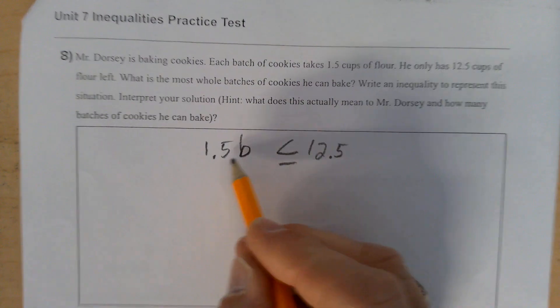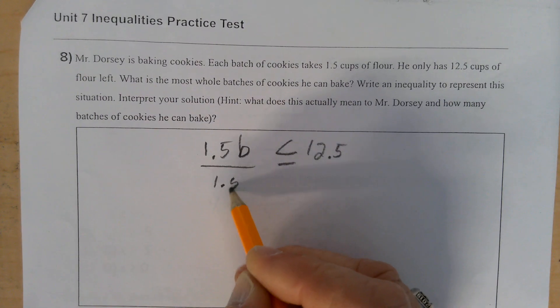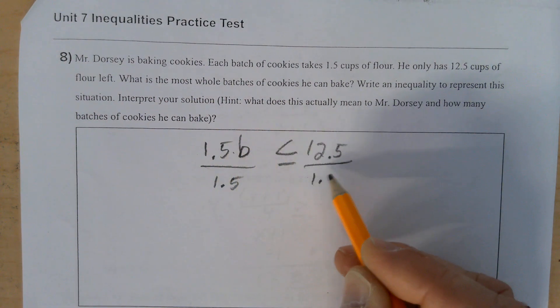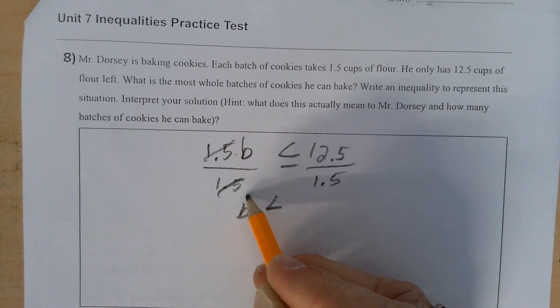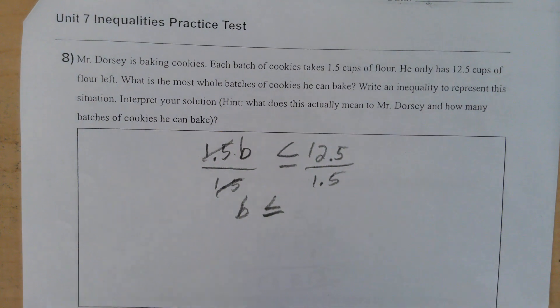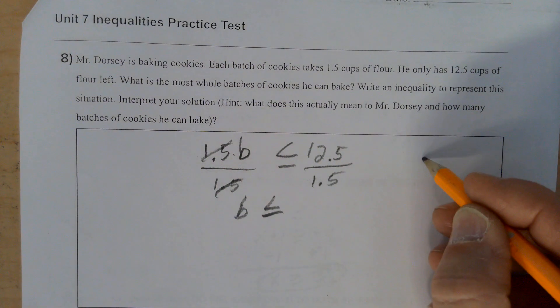So let's see what that means. I need to divide both sides by 1.5 because I'm currently multiplying. When I do that, these cancel. B is less than or equal to whatever 12.5 divided by 1.5 is.